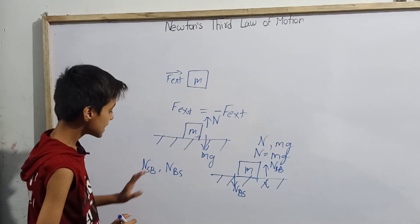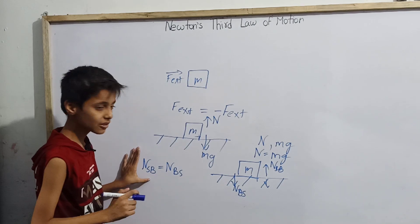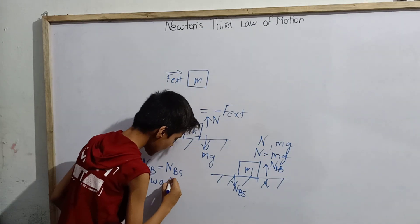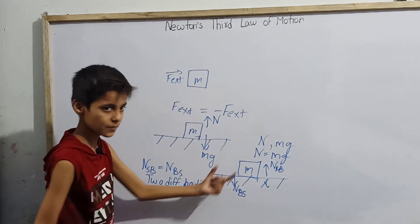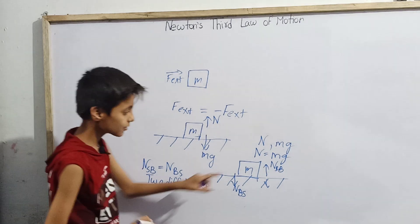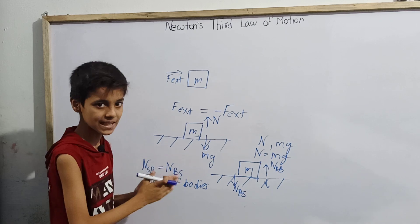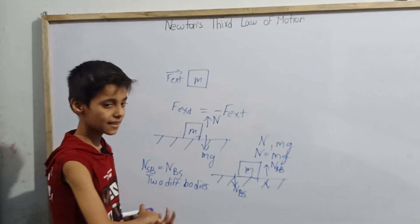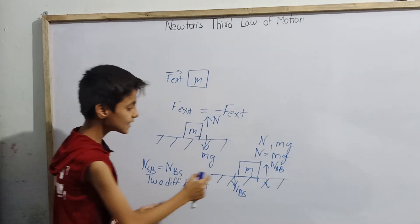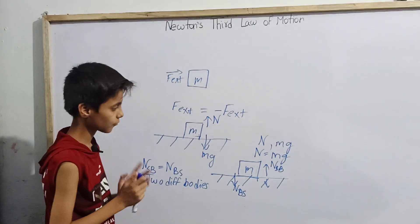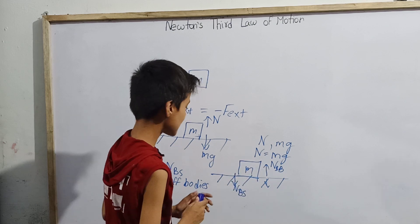Now, are NSB and NBS an action-reaction pair? Both are normal contact forces — their magnitude is equal, they act over two different objects (one is the surface and the other is the block of mass M), and their direction is opposite. They follow all three conditions: first, magnitude same and direction opposite; second, they act over two different objects; and third, they are of the same nature — both are normal contact forces. So in such a case, Newton's third law of motion is valid and these forces are action-reaction forces.